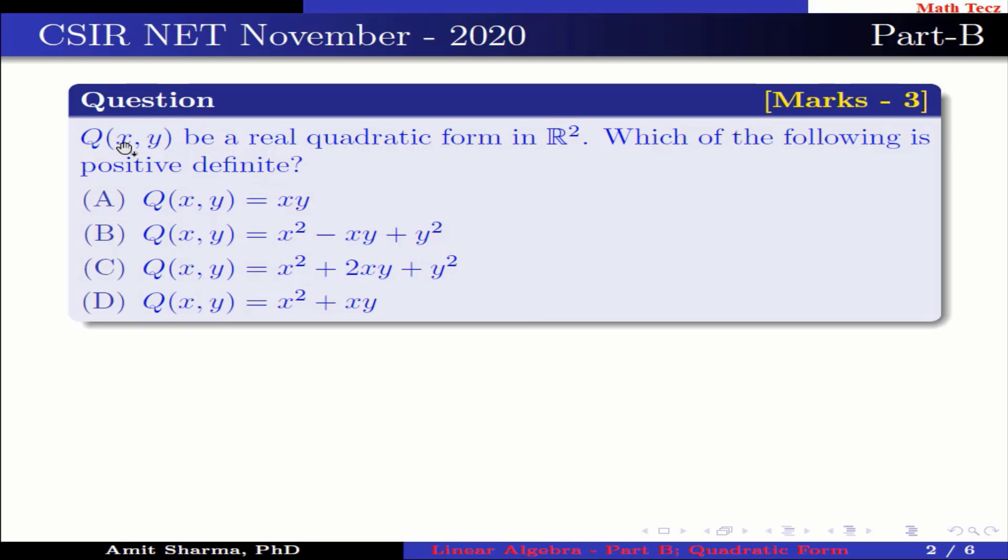Question: Q(x,y) be a real quadratic form in R². Which of the following is positive definite? Option A: Q(x,y) = xy. Option B: Q(x,y) = x² - xy + y². Option C: Q(x,y) = x² + 2xy + y². Option D: Q(x,y) = x² + xy.